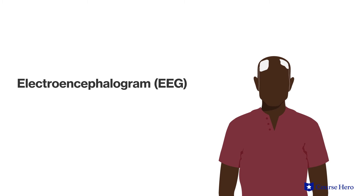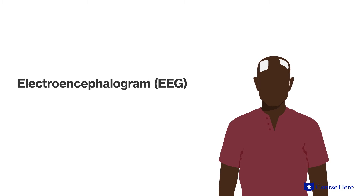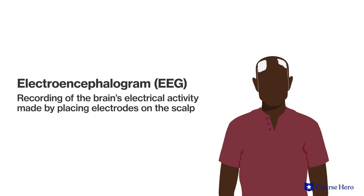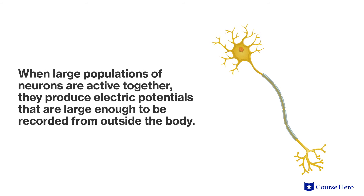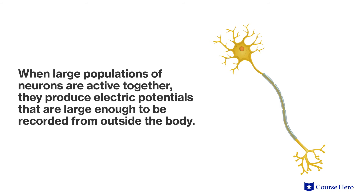EEGs, or electroencephalograms, are a recording of the brain's electrical activity made by placing electrodes on the scalp. When large populations of neurons are active together, they produce electric potentials that are large enough to be recorded outside of the body. The pattern of this electrical activity differs depending on whether a person is awake, drowsy, relaxed, excited, or in various stages of sleep.